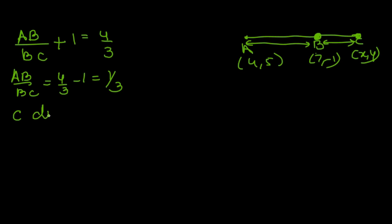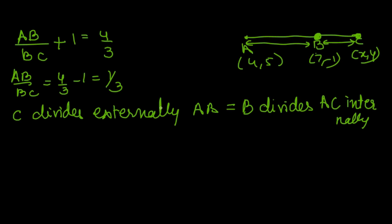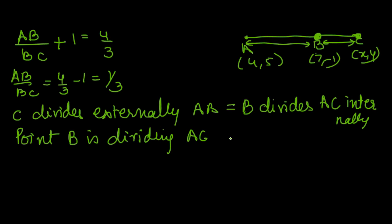If C divides AB externally, this is the same as saying that B divides AC internally. We have converted this external division question to an internal division. Since AB:BC = 1:3, point B divides AC internally in the ratio 1:3. We can now apply the regular section formula.